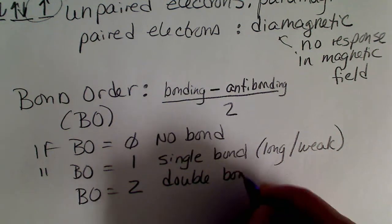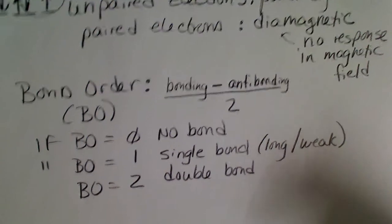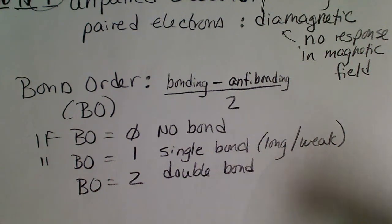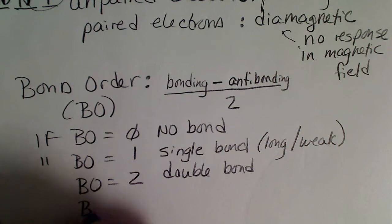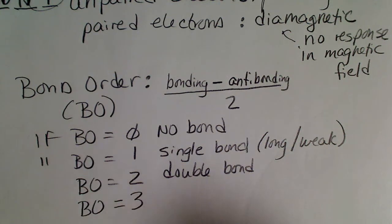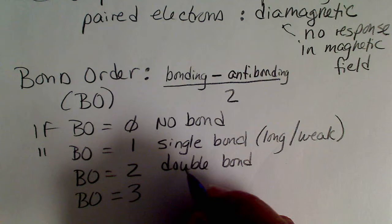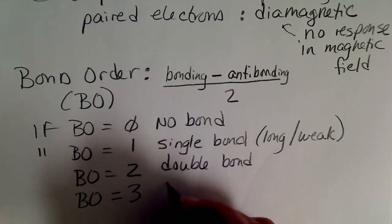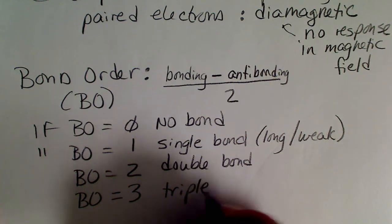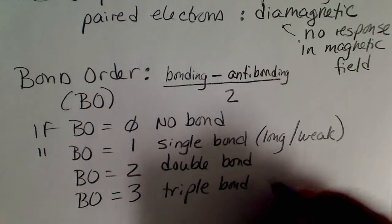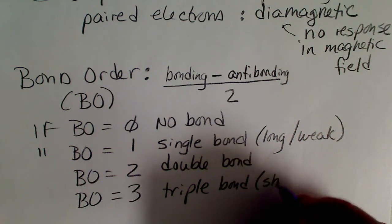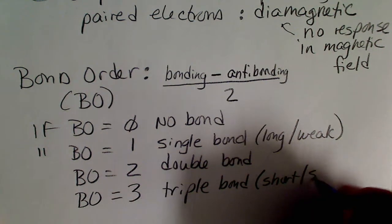We can tell from the Lewis dot structures whether or not our molecule has a double, triple, or single bond. But molecular orbital theory verifies that. A bond order of three would be a triple bond. And that's a short bond and the strongest.